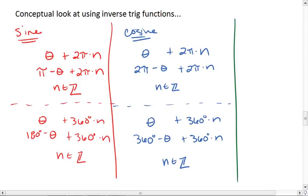So for tangent, we get theta plus pi times n, where n is an integer. Or, if we're working in degrees, theta plus 180 degrees times n, where n is an integer.